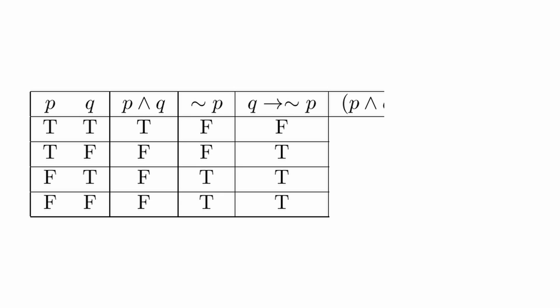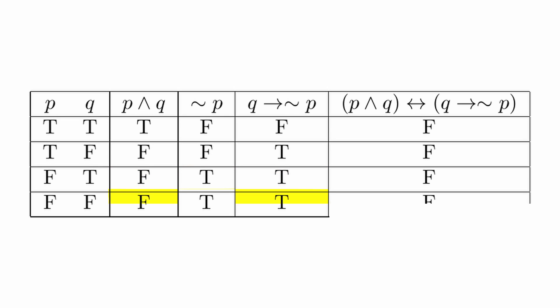And then, finally, from there, we stick these two together, where we end up seeing that the conjunction never matches the conditional. Then, in the first case, it's true-false, then false-true, false-true, and false-true.